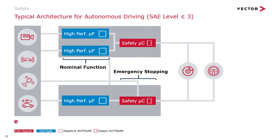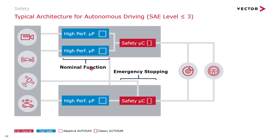Drawing a very high-level system view, we can imagine a typical architecture for autonomous driving. We have high-performance microcontrollers implementing all the rich functionality based on Adaptive MICROSAR — fail-safe — where nominal functionality and features are implemented. Closer to the actual actuators, we also have fail-operational ECUs that can take over in case the nominal functionality fails, where Classic MICROSAR would be applied.